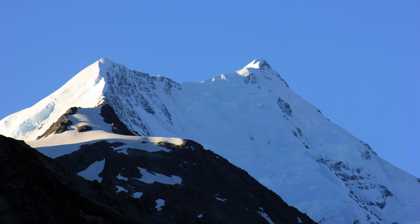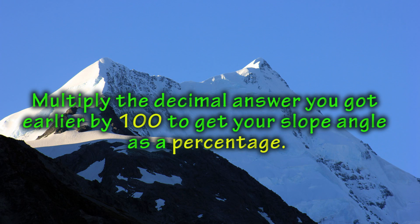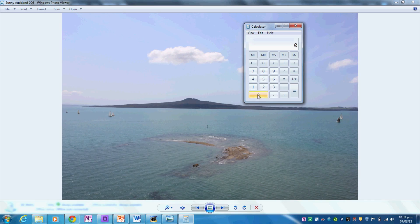Finally, we want to calculate our slope angle as a percentage. Simply go back to the decimal answer we had before, which in this case was 0.13, and convert it to a percentage. So 0.13 times 100 equals 13 percent.